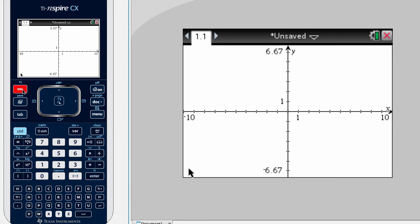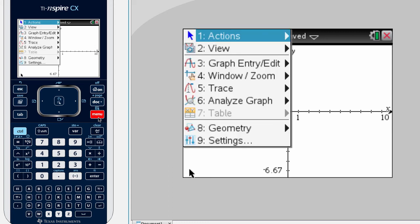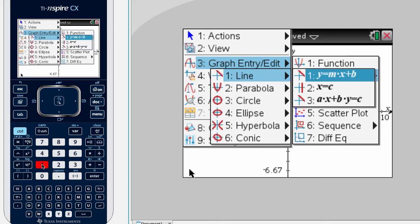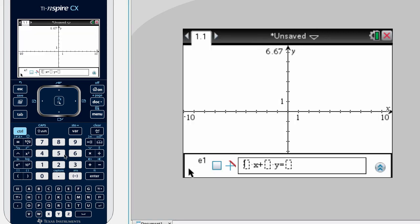and go ahead and graph one from standard form. So again, I'm going to go to the very same place, 3, and then 2, 1 for a line, and now we'll select number 3 for standard form. And we'll go ahead and put in a positive 1 and a negative 1 and a 4, and that should graph another line.